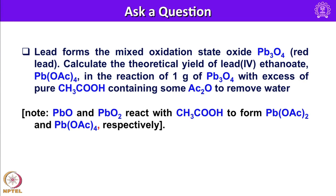Lead forms mixed oxidation state oxides. In Pb3O4 we have two different types of lead ions. The problem is to calculate the theoretical yield of lead diacetate and lead tetraacetate in the reaction of 1 gram of Pb3O4 with excess pure acetic acid containing acetic anhydride. The acetic anhydride removes water to regenerate acetic acid. PbO (Pb2+) and PbO2 (Pb4+) react with acetic acid to form lead diacetate and lead tetraacetate respectively.